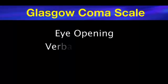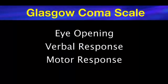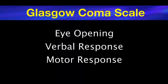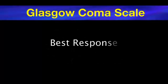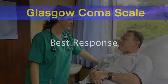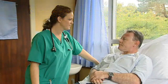The Glasgow Coma Scale has three components: eye-opening, verbal response, and motor response. These will be demonstrated in turn. Each of these depends on how the patient responds to either a vocal or painful stimulus. When performing the assessment, the best response should be elicited. Each component should be assessed in a stepwise manner.